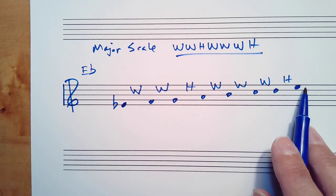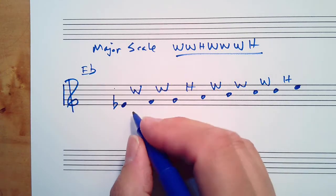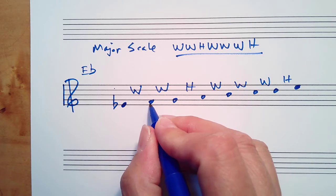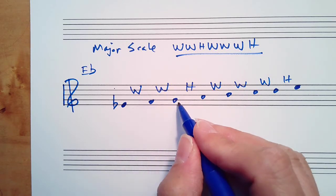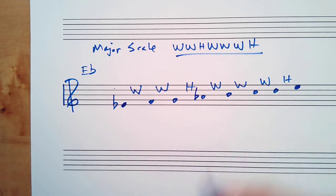E flat to F is a whole step. F to G is a whole step. Here we need a half step, so we need a flat.